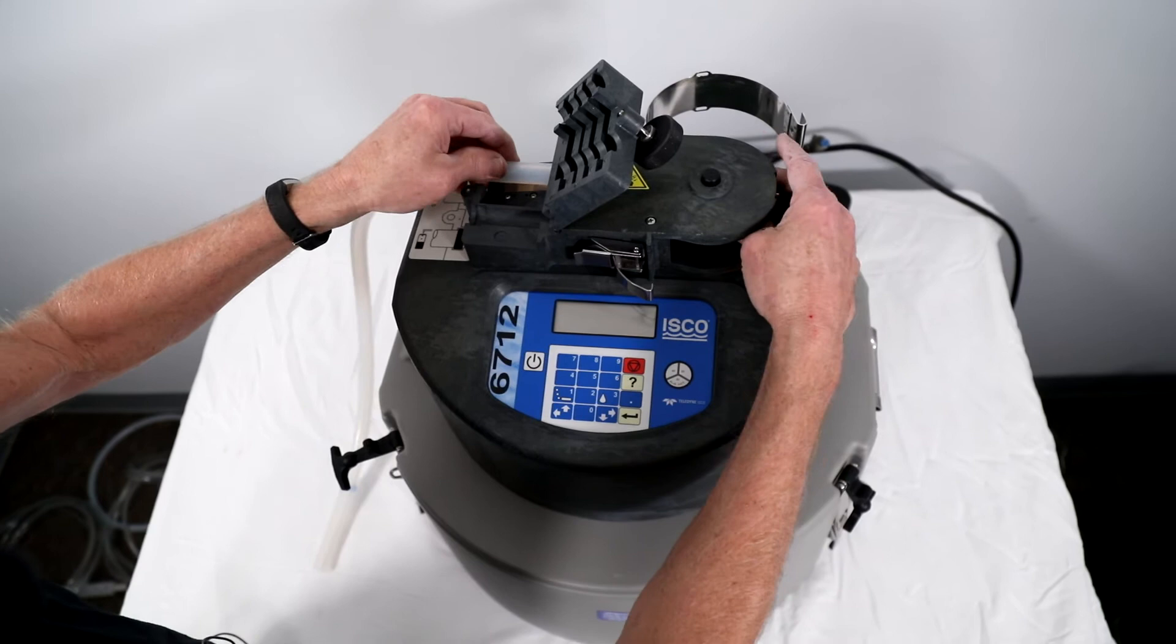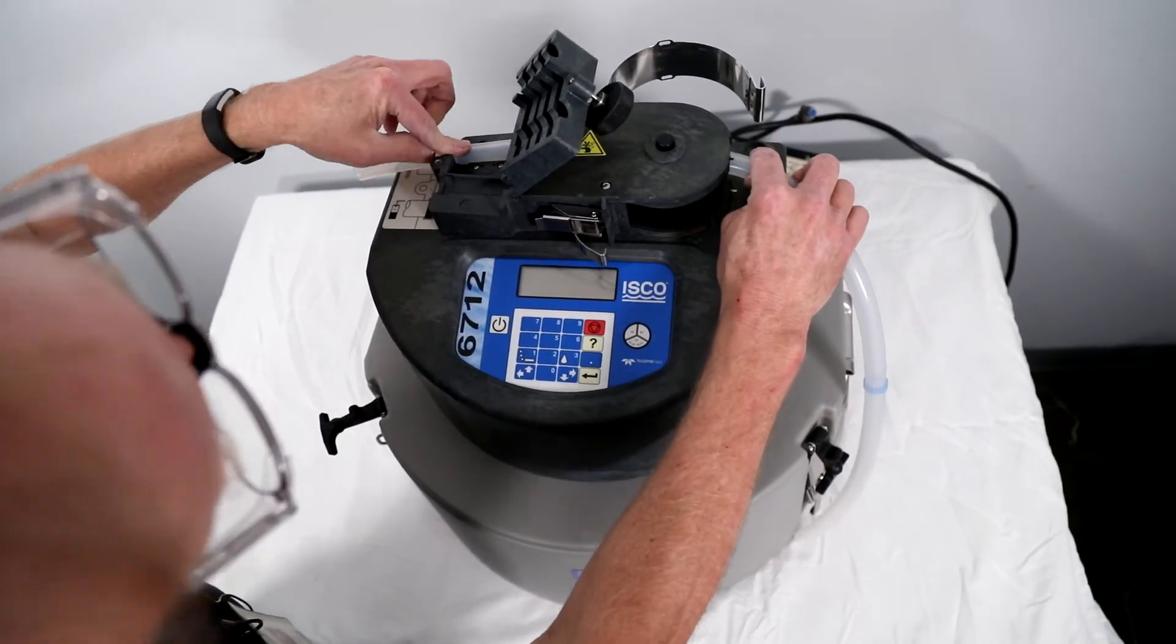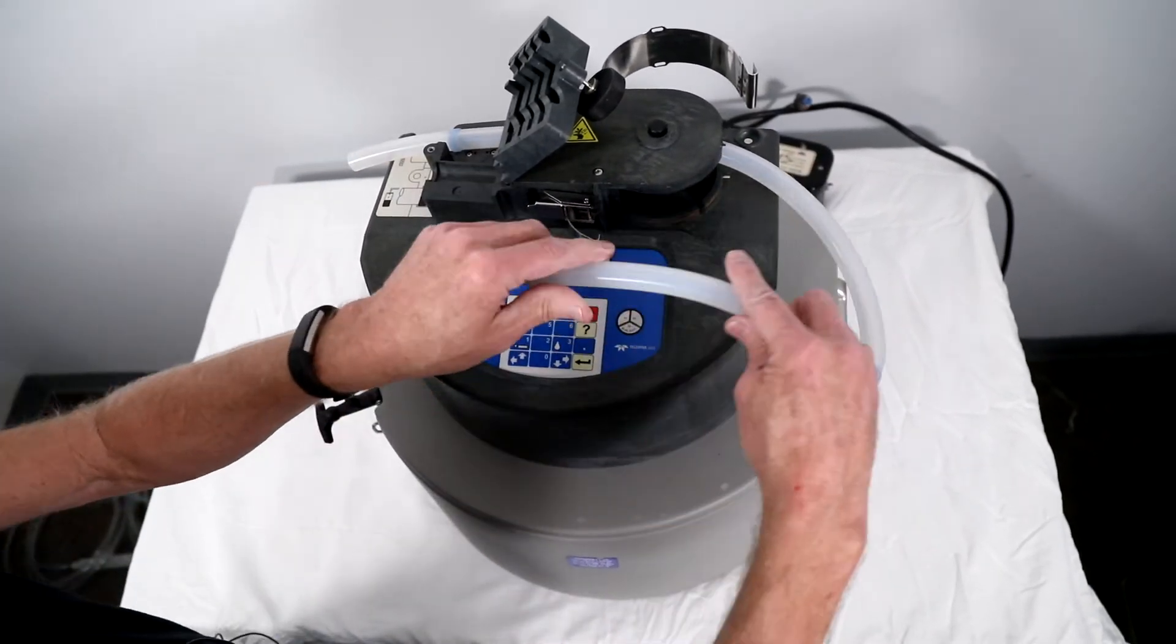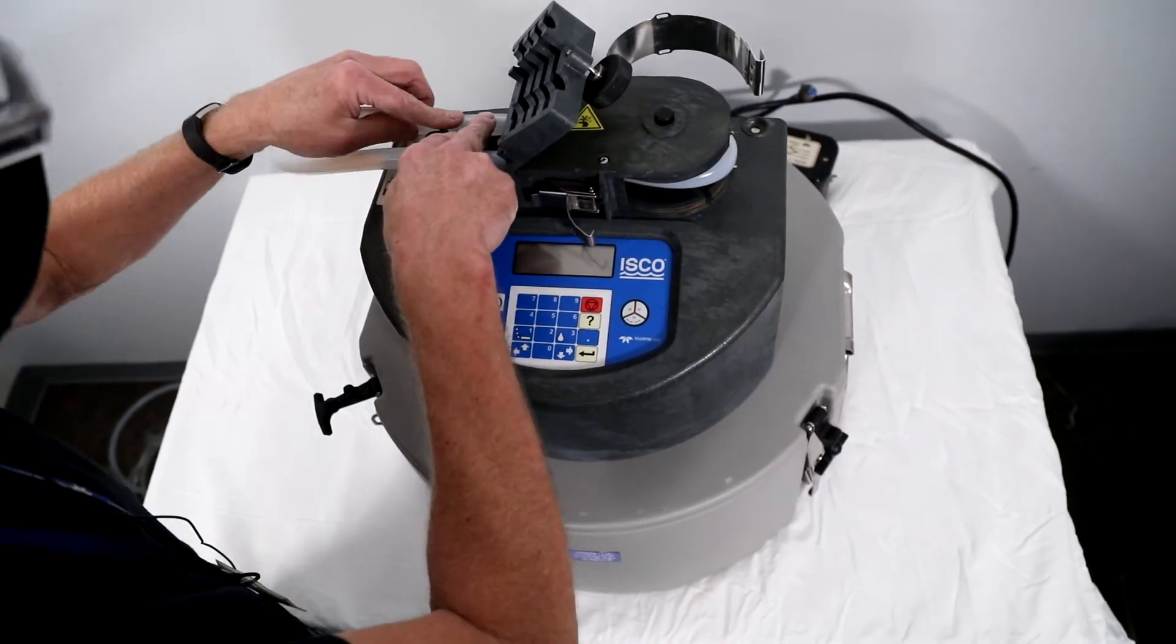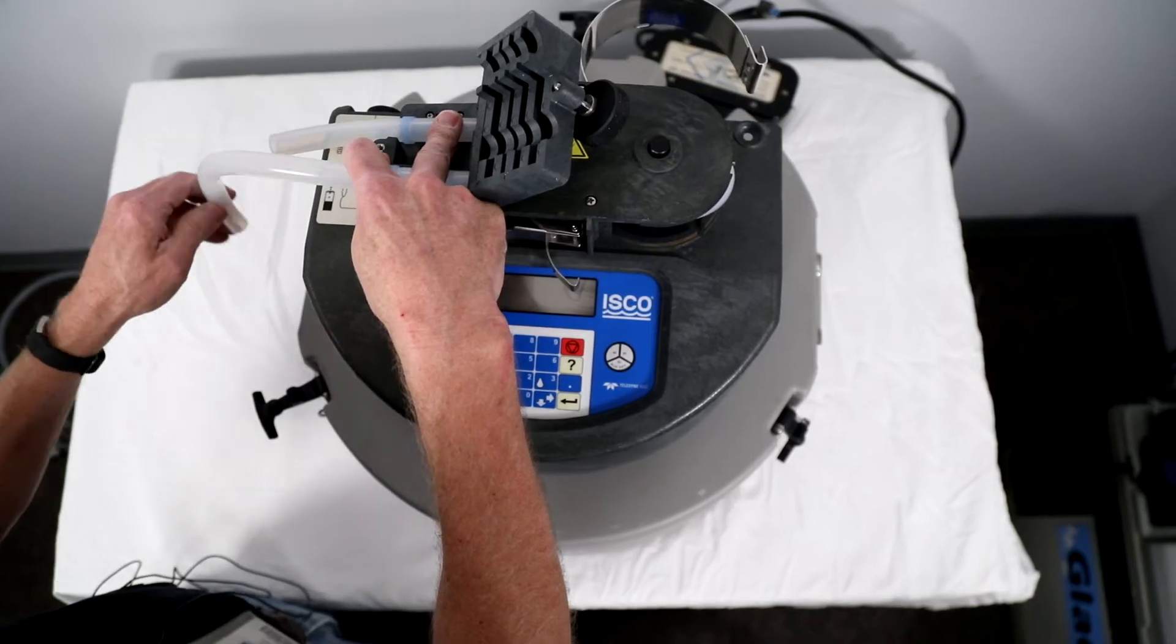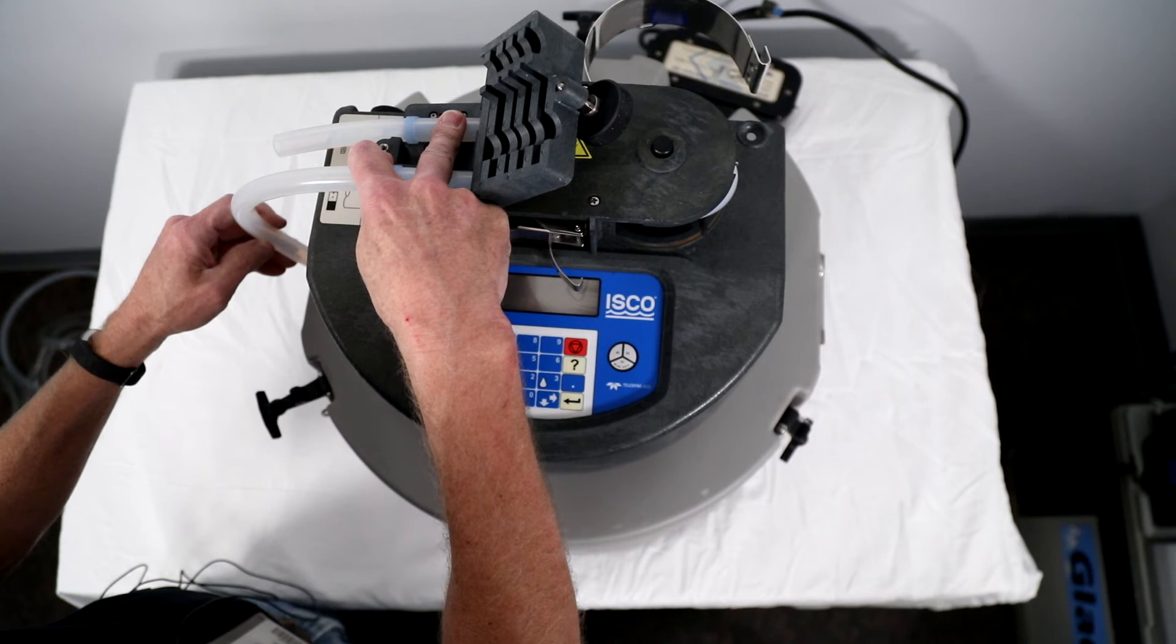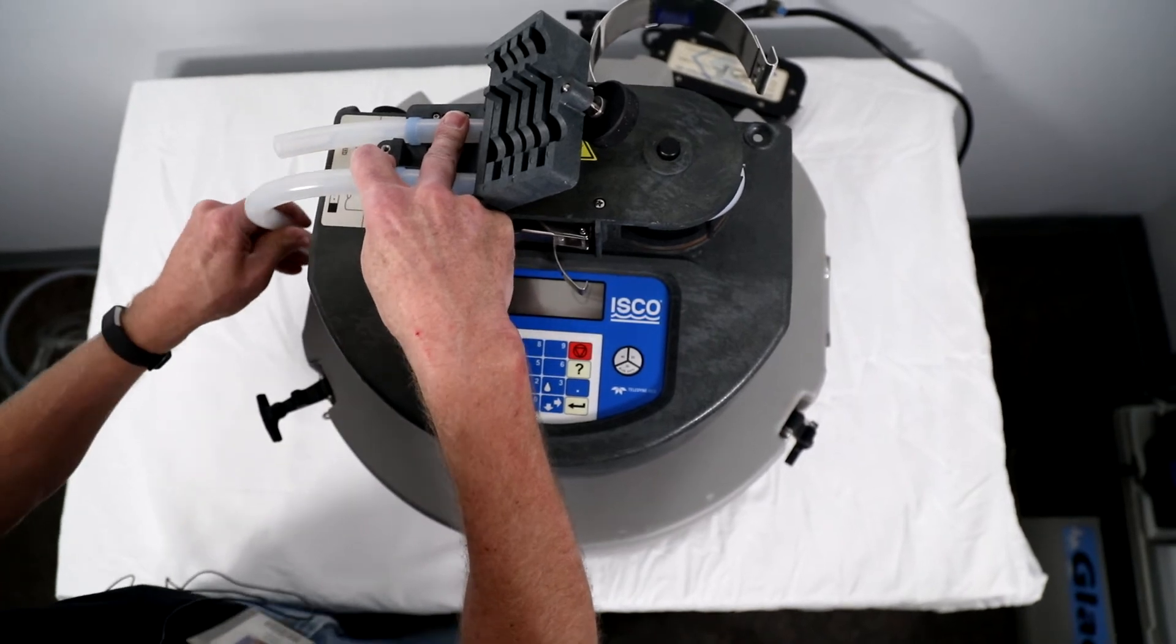Insert the new pump tubing into the sampler head making sure that the blue band closest to the end of the new pump tube fits into the groove for connection to the suction line. Connect the discharge side of the pump tubing to the bulkhead fitting on the center section.